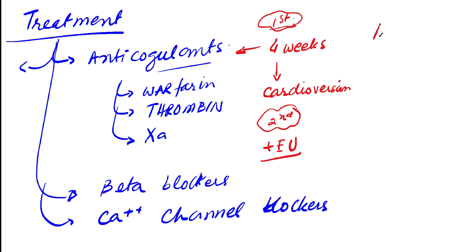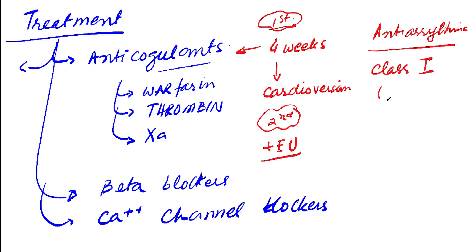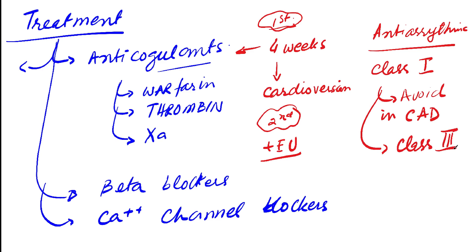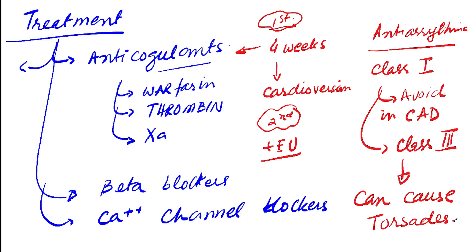Anti-arrhythmic drugs can also be used but require caution. Class 1 agents (sodium channel blockers) are useful but are negatively inotropic and pro-arrhythmic — they should be avoided if the patient has coronary artery disease. Class 3 agents can be administered to patients with coronary artery disease, however there is a 3% risk of torsades de pointes.